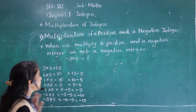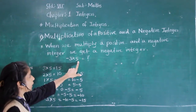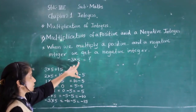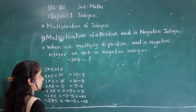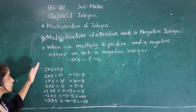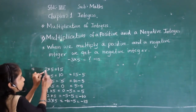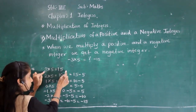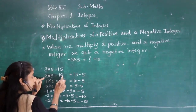Let's learn this concept using the following pattern. Minus 3 into 5: when we multiply a positive and a negative integer we get a negative integer, so minus 15 will be the answer. Now I started with a positive integer: 3 into 5 equals 15, 2 into 5 equals 10.